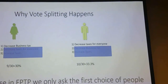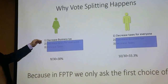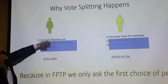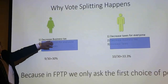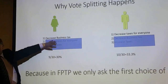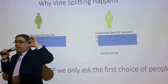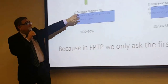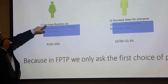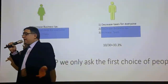First-past-the-post works by asking for the highest ranking — giving you the option to choose what you like. In the current ballot, you choose one person. This hides the fact that, for example, if you don't decrease business tax, a voter would like to decrease everyone's tax. But we don't ask their second vote. Therefore, first-past-the-post hides the information.